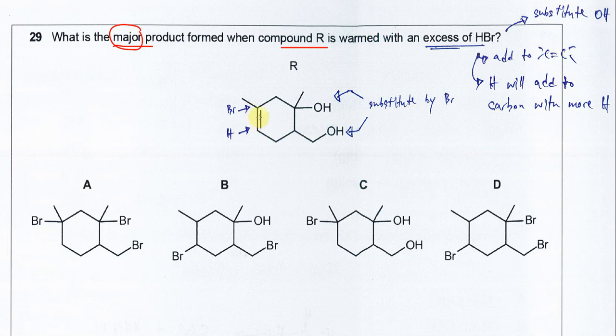In this double bond, we know that this carbon has no hydrogen, but this carbon has one hydrogen. So the hydrogen in the HBr will add to this carbon, followed by the bromine which goes to another carbon.